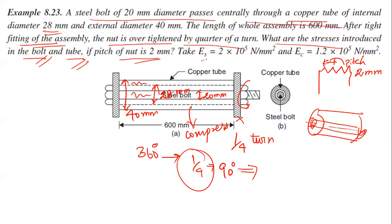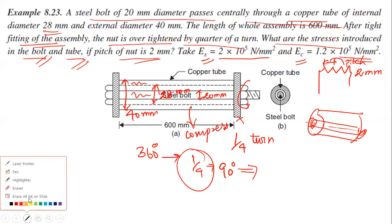The modulus of elasticity of steel, E_s, is equal to 2 × 10⁵ N/mm². The modulus of elasticity of copper, E_c, is equal to 1.2 × 10⁵ N/mm². We need to find the stress values induced in this arrangement.